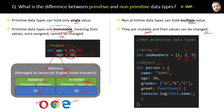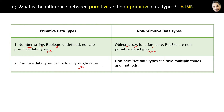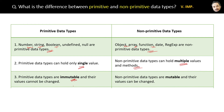Now let's conclude the differences between them. First, number, string, boolean, undefined, and null are primitive data types, whereas objects, arrays, functions, dates, and regex are non-primitive data types. Second, primitive data types can hold only a single value, whereas non-primitive data types can hold multiple values and methods also. Third, primitive data types are immutable and their values cannot be changed, whereas non-primitive data types are mutable and their values can be changed.